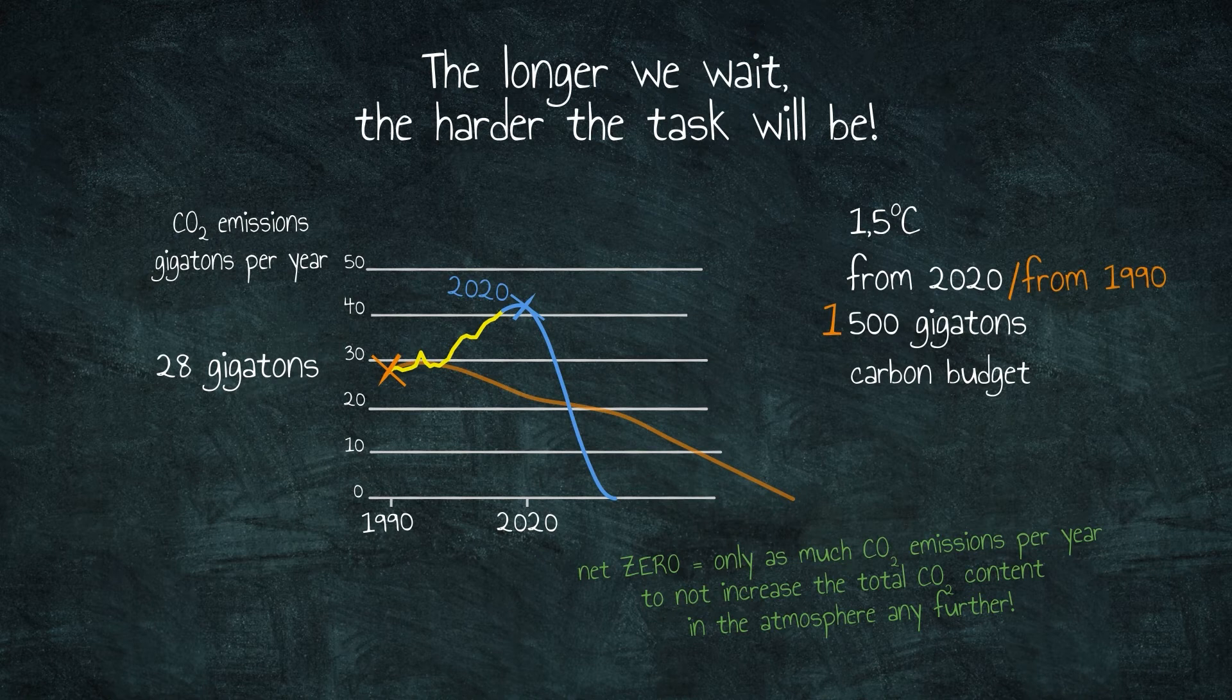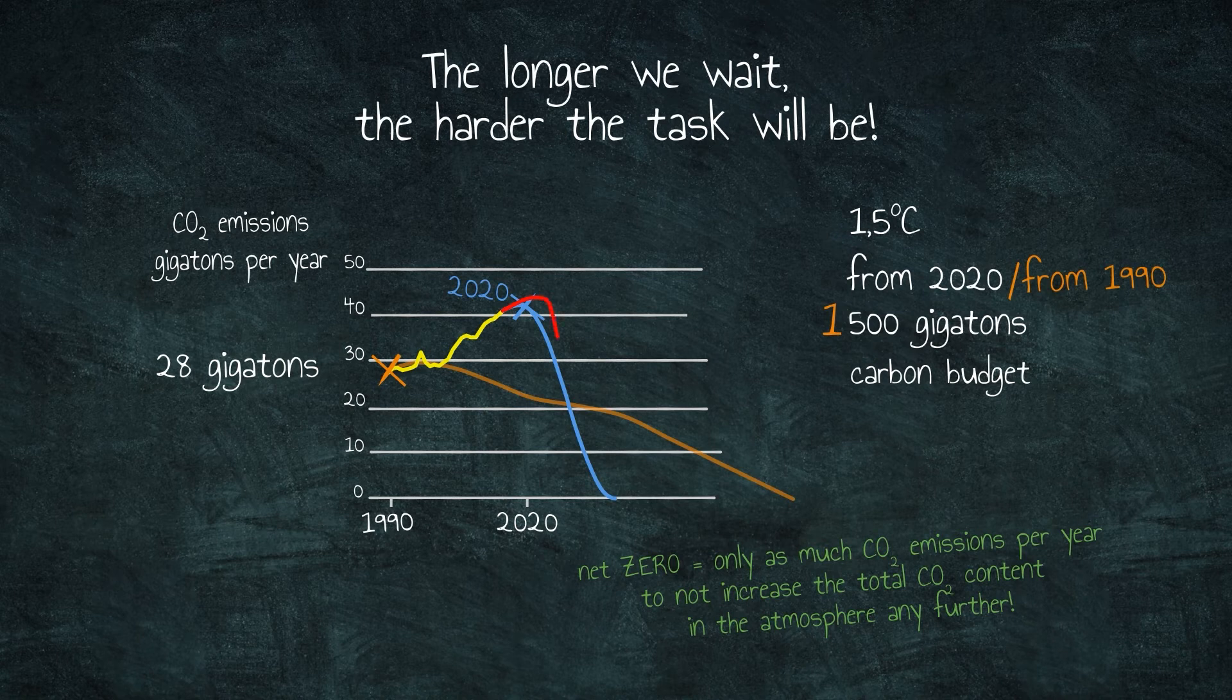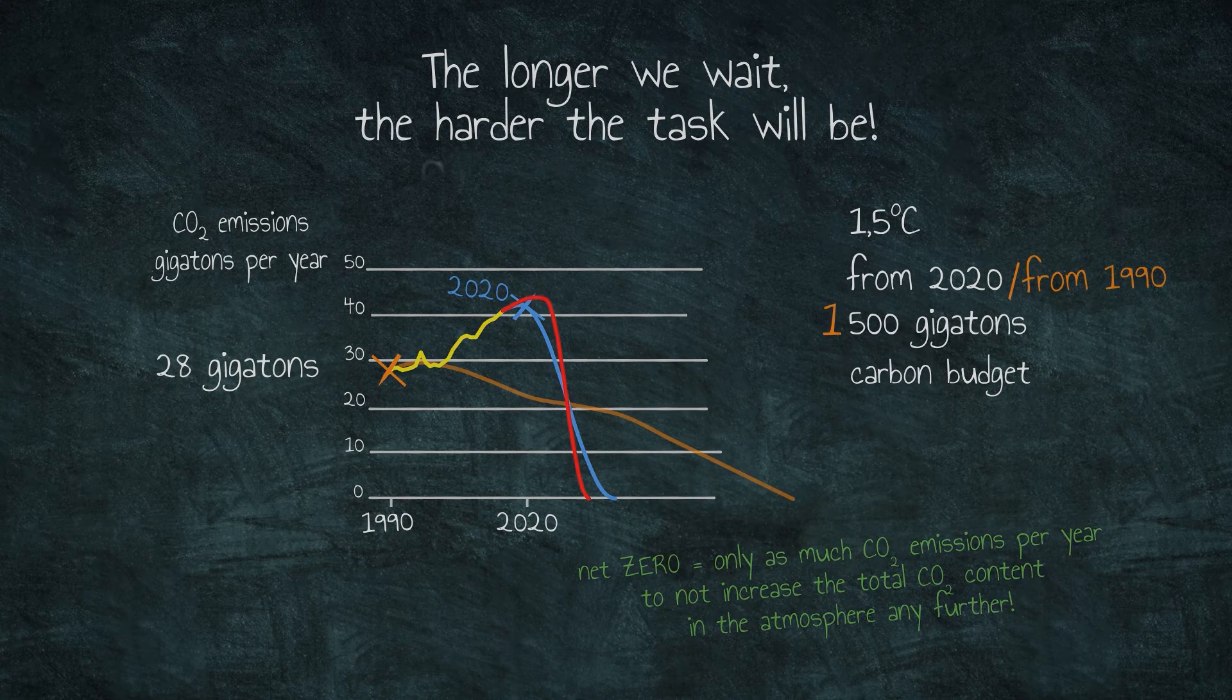We must change more in less time. Referencing our graph, the route to net zero has become steeper. And the longer we wait and the more CO2 we continue to emit, the steeper, the harder and the more expensive it will become.